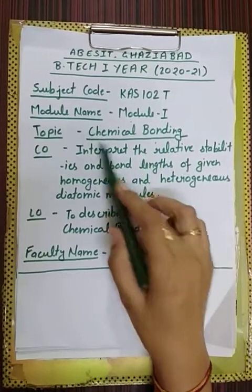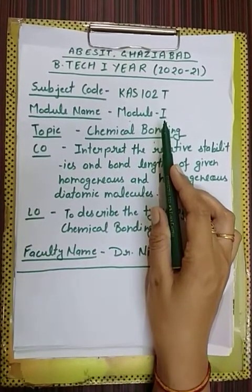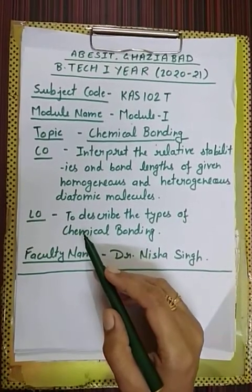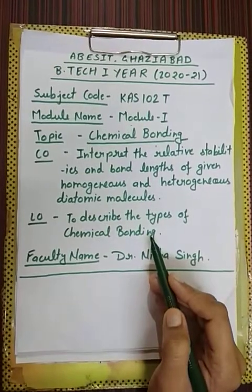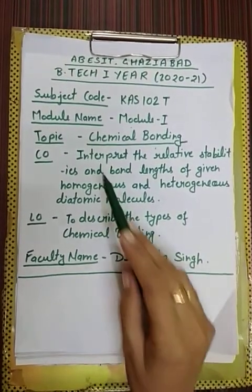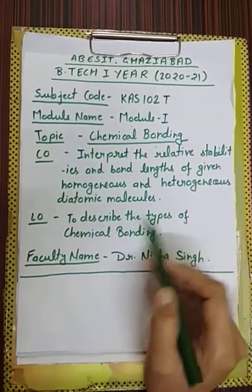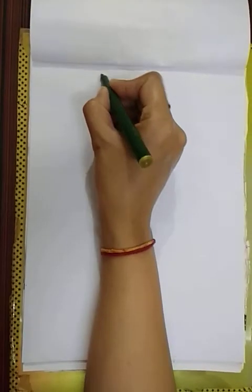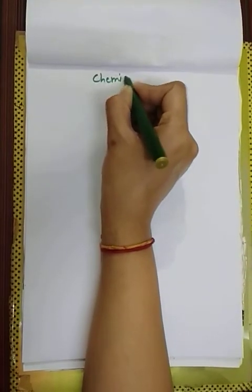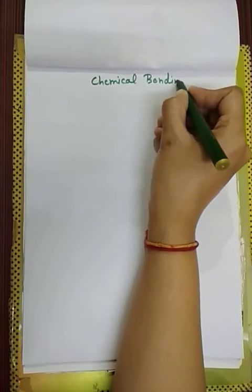After understanding this topic, we will easily understand the other topics of module 1. The outcome of our lecture is to describe the types of chemical bonding. That means, after completion of this topic on chemical bonding, all of you will be able to describe the types of chemical bonding. So, let's start our topic: chemical bonding.